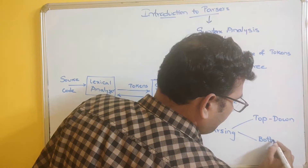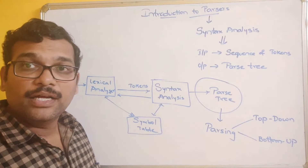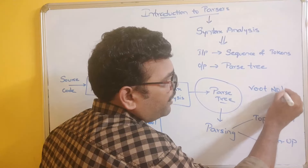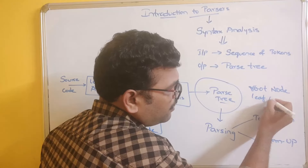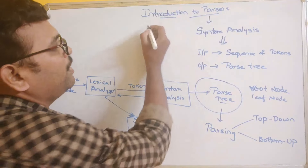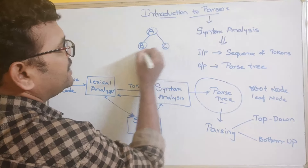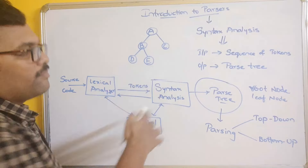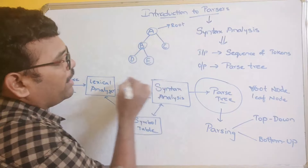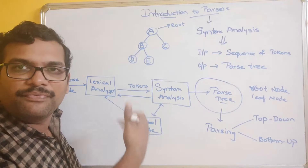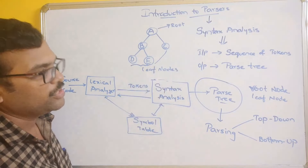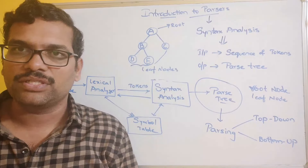Parsing can be implemented in two ways: top-down parsing and bottom-up parsing. Whenever we refer to a tree, there will be a root node from where the tree has been generated, and leaf nodes where the tree ends — that is, nodes that cannot be expanded further. For example, considering nodes a, b, c, d, e — the node from where the tree starts is the root node, and nodes like d, e, and c that cannot be expanded further are called leaf nodes.